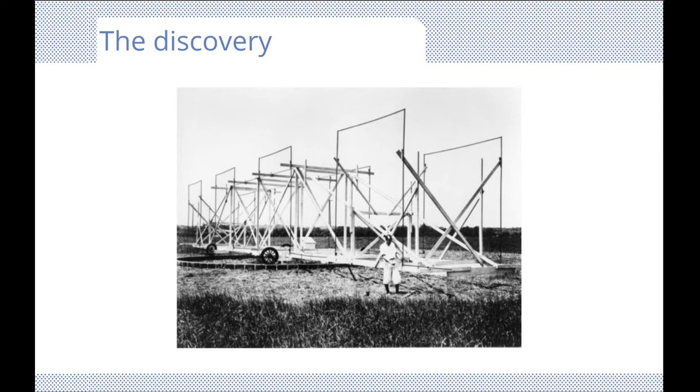Jansky built the antenna shown in the image to monitor radio static at 20.5 MHz. Its reception pattern was a fan beam pointed near the horizon and could be rotated in azimuth. He found most of the static is produced by lightning strikes, but he also discovered a steady hiss whose strength rose and fell daily with a period of 23 hours and 56 minutes. This he recognized to be the length of the sidereal day, and deduced the hiss must originate outside the solar system. The hiss seemed strongest in the direction of the galactic center.